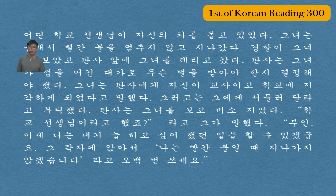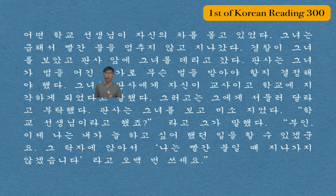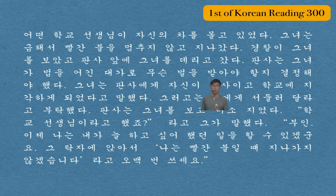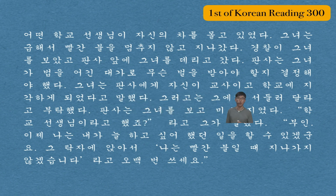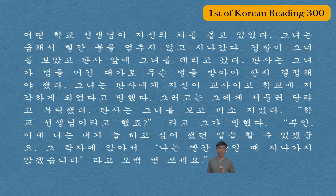Now let's go over the whole paragraph together: 어떤 학교 선생님이 자신의 차를 몰고 있었다. 그녀는 급해서 빨간불을 멈추지 않고 지나갔다. 경찰이 그녀를 보았고 판사 앞에 그녀를 데리고 갔다. 판사는 그녀가 법을 어긴 대가로 무슨 벌을 받아야 할지 결정해야 했다. 그녀는 판사에게 자신이 교사이고 학교에 지각하게 되었다고 말했다. 그러고는 그에게 서둘러 달라고 부탁했다. 판사는 그녀를 보고 미소 지었다. 학교 선생님이라고 했죠? 라고 그가 말했다. 부인 이제 나는 내가 늘 하고 싶어 했던 일을 할 수 있겠군요. 그 탁자에 앉아서 나는 빨간불일 때 지나가지 않겠습니다 라고 500번 쓰세요.